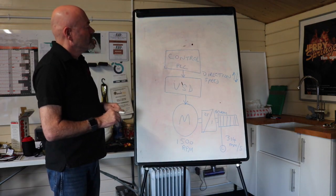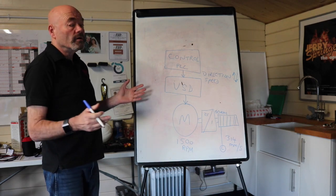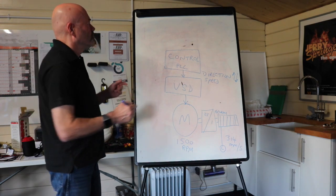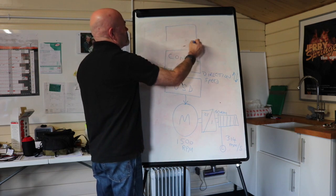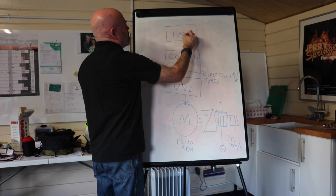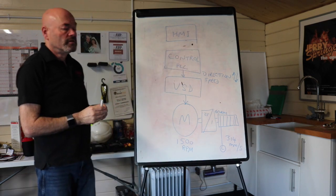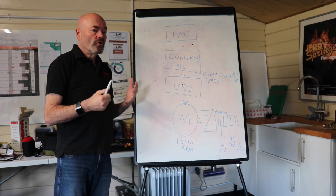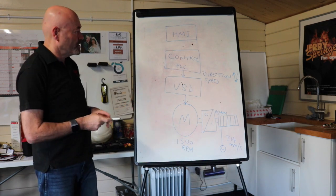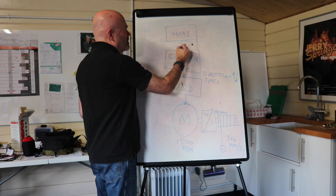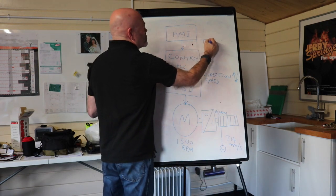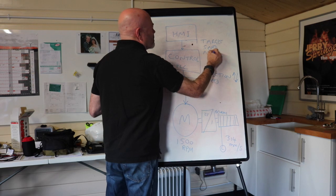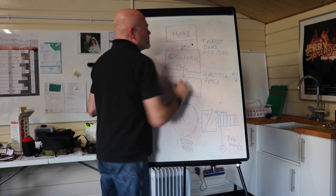Now the control system needs to be told by the operator where to go, what position do we want to go to, how fast do we want to travel at, how much acceleration, deceleration do we want to do. So for that we have an HMI, human machine interface. Now this could be a computer, laptop, a touch screen or a console which generally has a computer inside it. And this gives information in form of target, speed, accel, decel as a minimum.